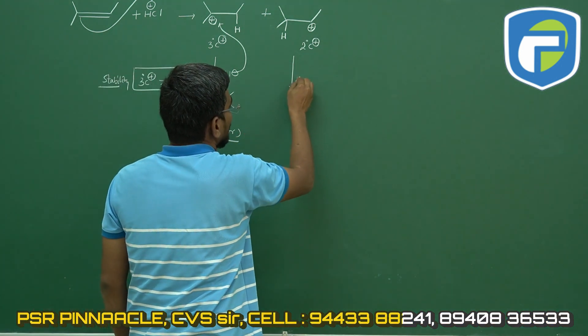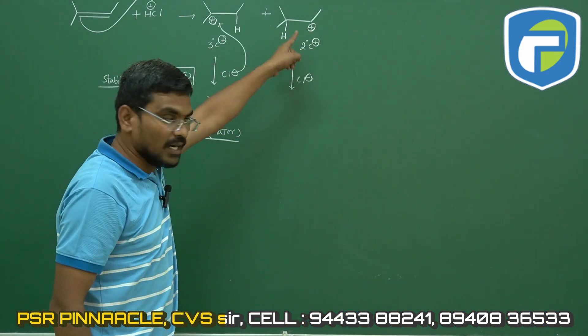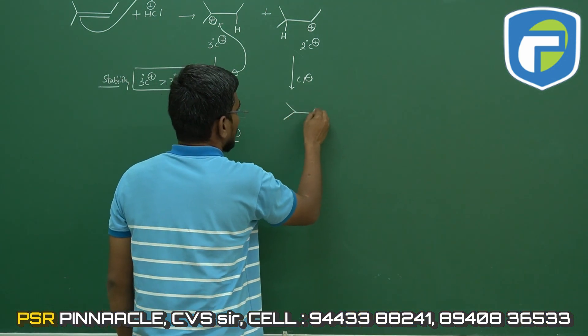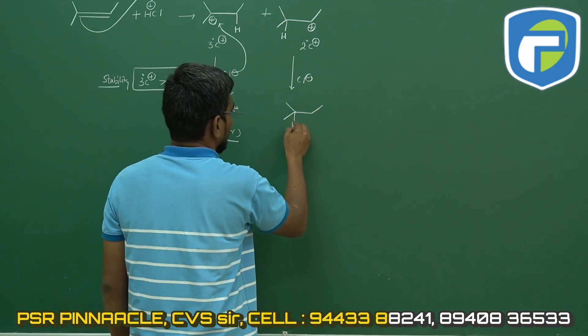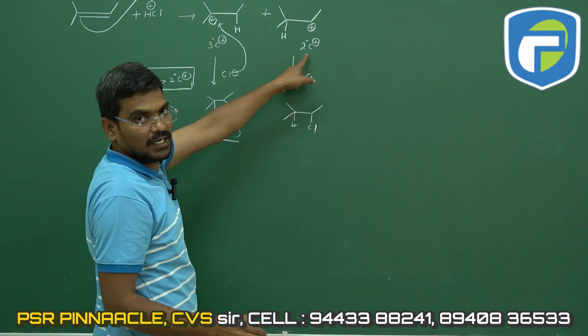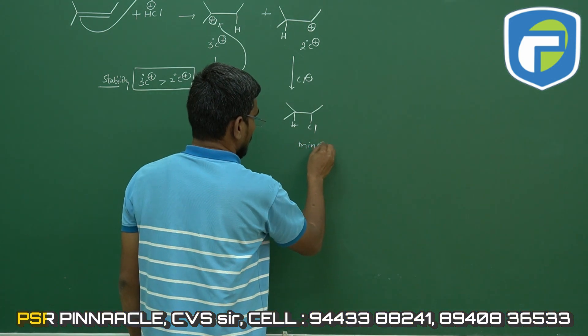And here we can find secondary carbocation. When the secondary carbocation is formed, that is taken as minor. Because when compared with tertiary, secondary carbocation is less stable, hence it is taken as minor.